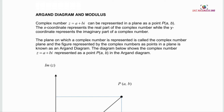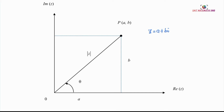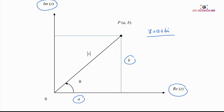The diagram below shows the complex number Z represented as a point P with coordinates A, B in the Argand diagram. In this Argand diagram, the X-axis represents the real part and the Y-axis represents the imaginary part of a complex number. For Z equals A plus Bi, we have A as the value of the real part and B as the value of the imaginary part.